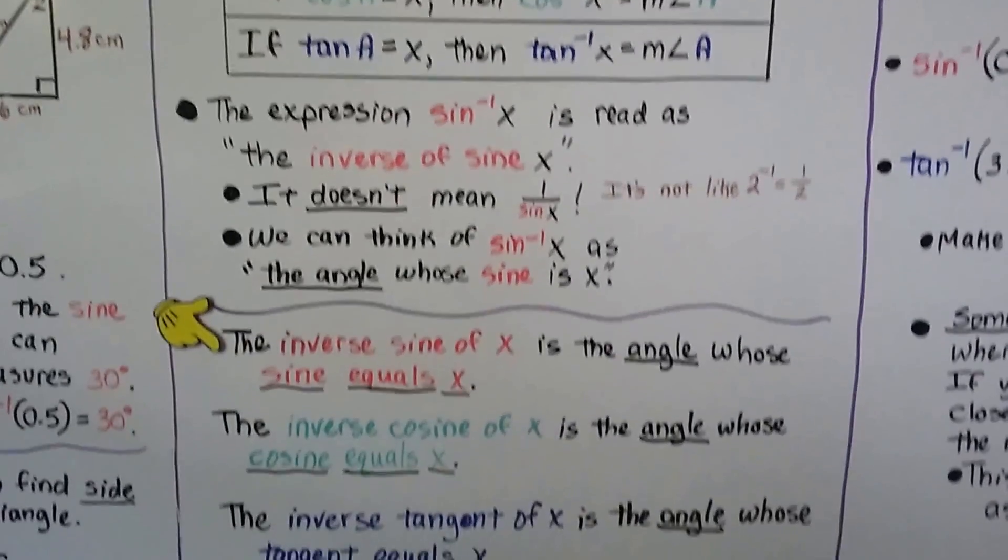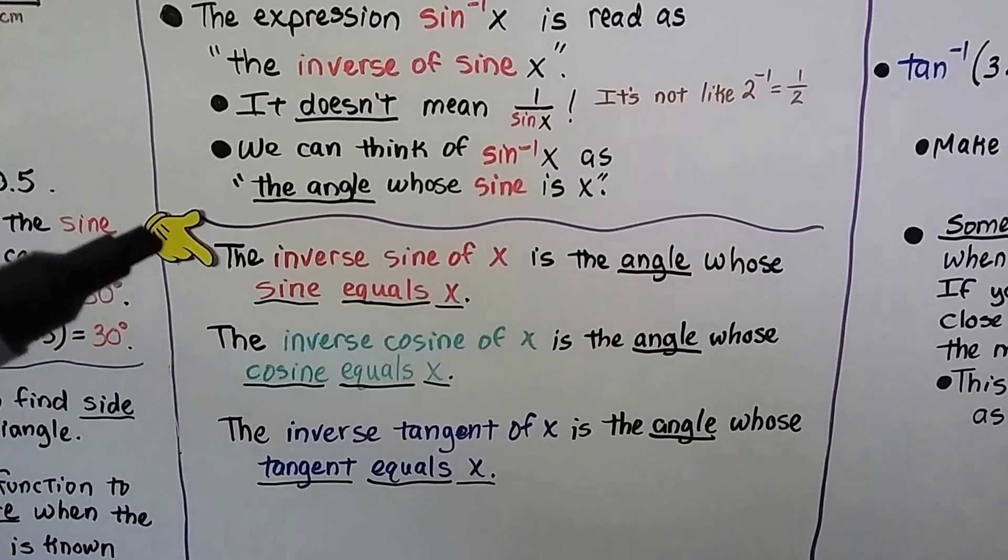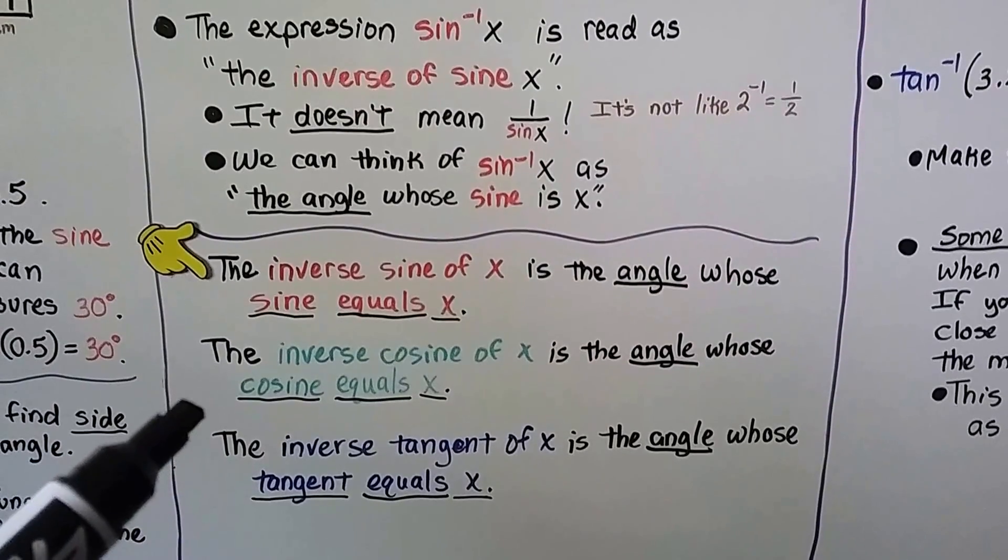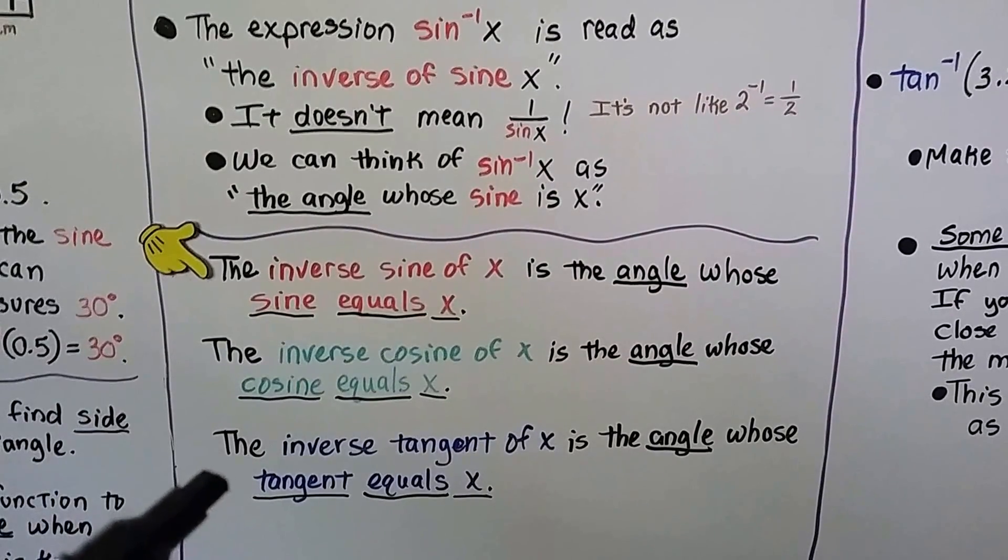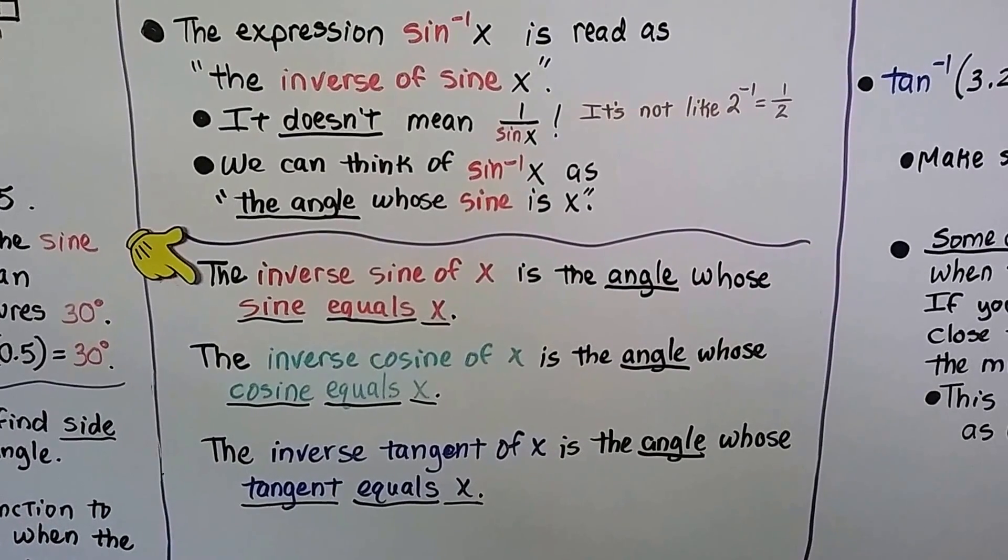We can think of the inverse sine of x as the angle whose sine is x. The inverse sine of x is the angle whose sine equals x. And the inverse cosine of x is the angle whose cosine equals x. And the inverse tangent of x is the angle whose tangent equals x.